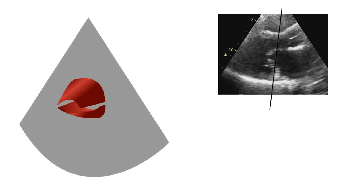If your patient has severe mitral stenosis, you should keep the heart rate down because rapid heart rates mean shorter diastole and less time available for filling, which is already reduced. The patient could also easily develop pulmonary congestion, in which case diuretics will likely be needed. Feel free to review this lecture again, and we'll see you in the next one on assessment of the aortic valve.